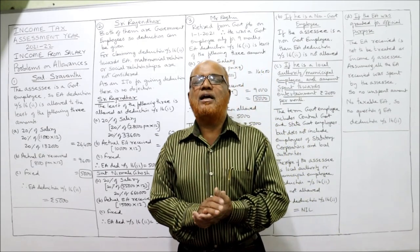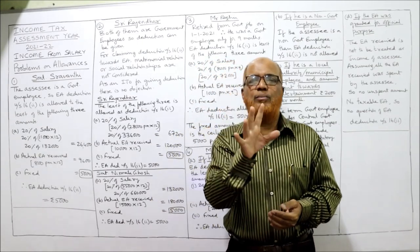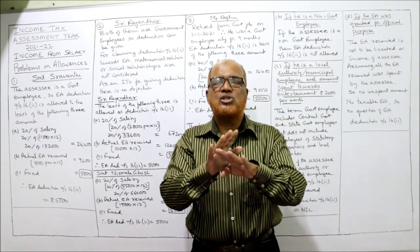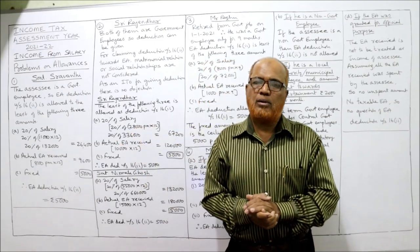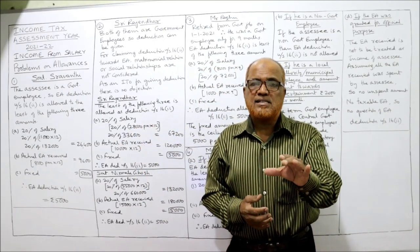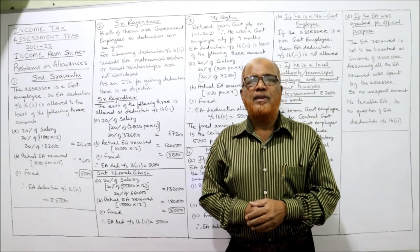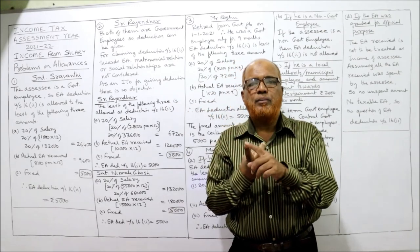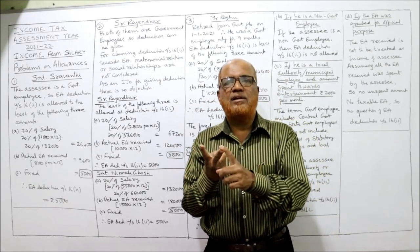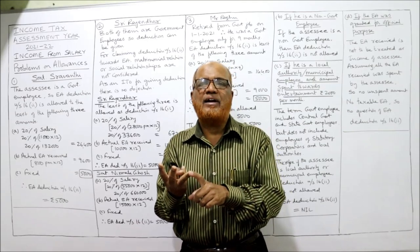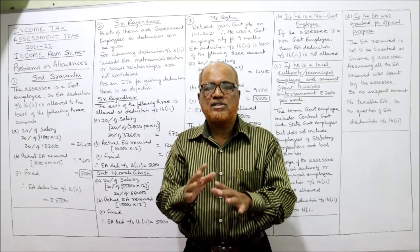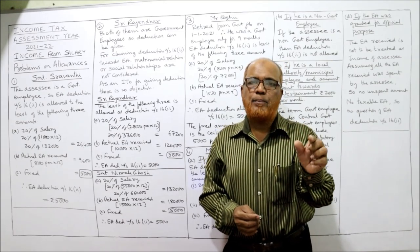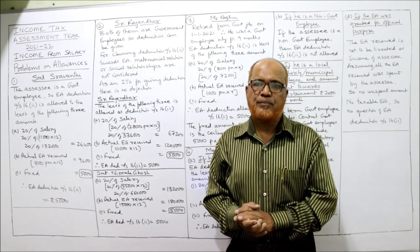EA deduction under Section 16-2 is allowed only for government employees. For non-government employees, EA deduction under Section 16-2 is not allowed. If the assessee is a government employee, the EA deduction will be allowed as the least of the following three amounts: 20% of salary, actual EA received, or the fixed ceiling amount of Rs. 5,000. The least of these three is allowed as deduction. Note that salary here means basic pay only, for the purpose of calculating EA deduction.